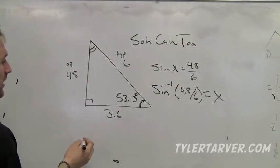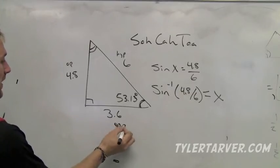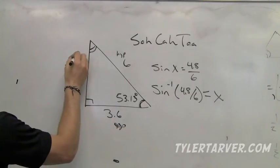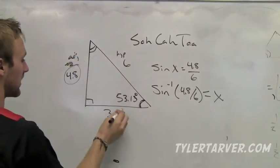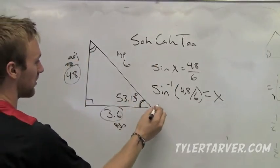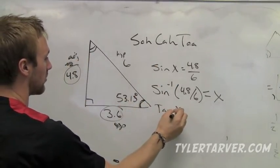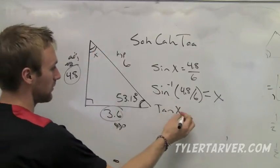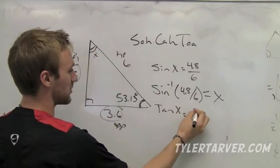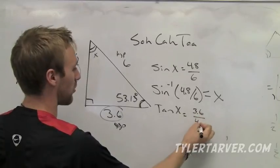Let's find this angle right here. This is opposite now, and now this is our adjacent, correct? So, we're going to do, I'm going to use these two, adjacent and opposite. That means I'm using tangent. So, tangent of, we'll make this our new x, equals opposite, which is 3.6, over adjacent, which is 4.8.